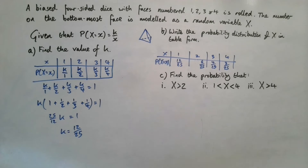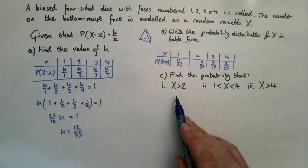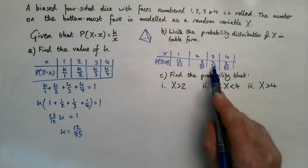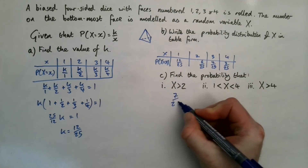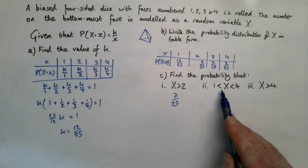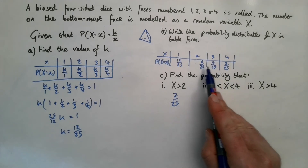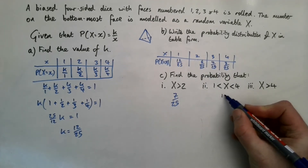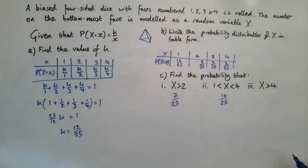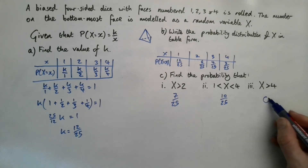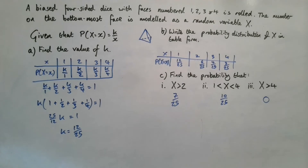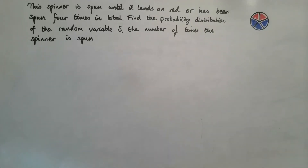For the final parts: P(x > 2) = 4/25 + 3/25 = 7/25. P(1 < x < 4) means x = 2 or 3, so 6/25 + 4/25 = 10/25. P(x > 4) = 0, since x cannot exceed four.